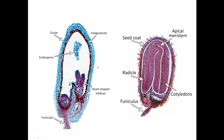Here are two microscopic views of the dicot seed. In one you can see the integument, the ovule, the endosperm as the nutritive tissue, and a heart-shaped embryo that is developing, along with the suspensor and haustorium. The suspensor is pushing the heart-shaped embryo towards the endosperm so that it can take all the nutrition and fully develop. In the other picture the embryo has fully developed — you can see the apical meristem, the two cotyledons, the radicle which will give rise to the root, and the seed coat. This is a completely developed dicot embryo.